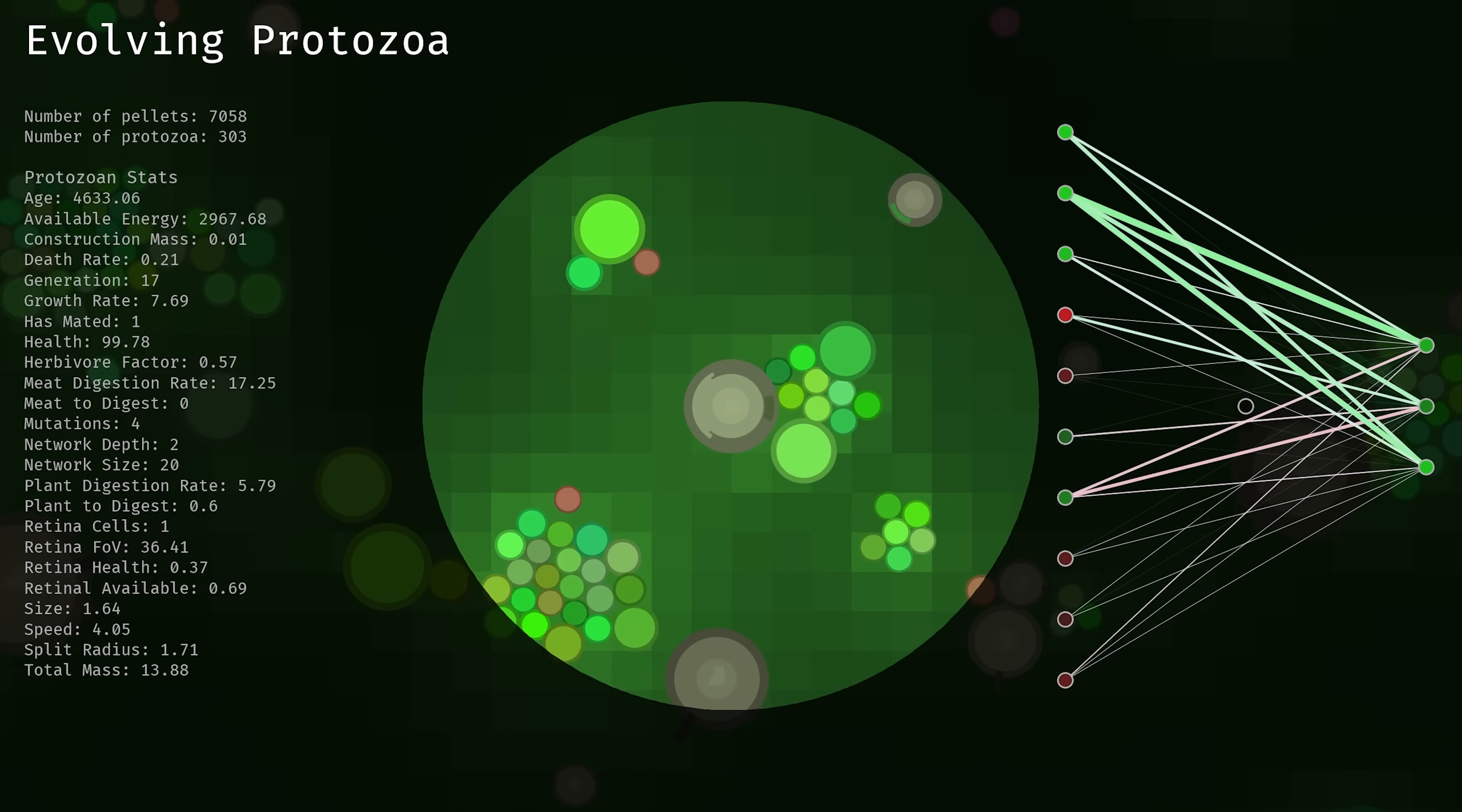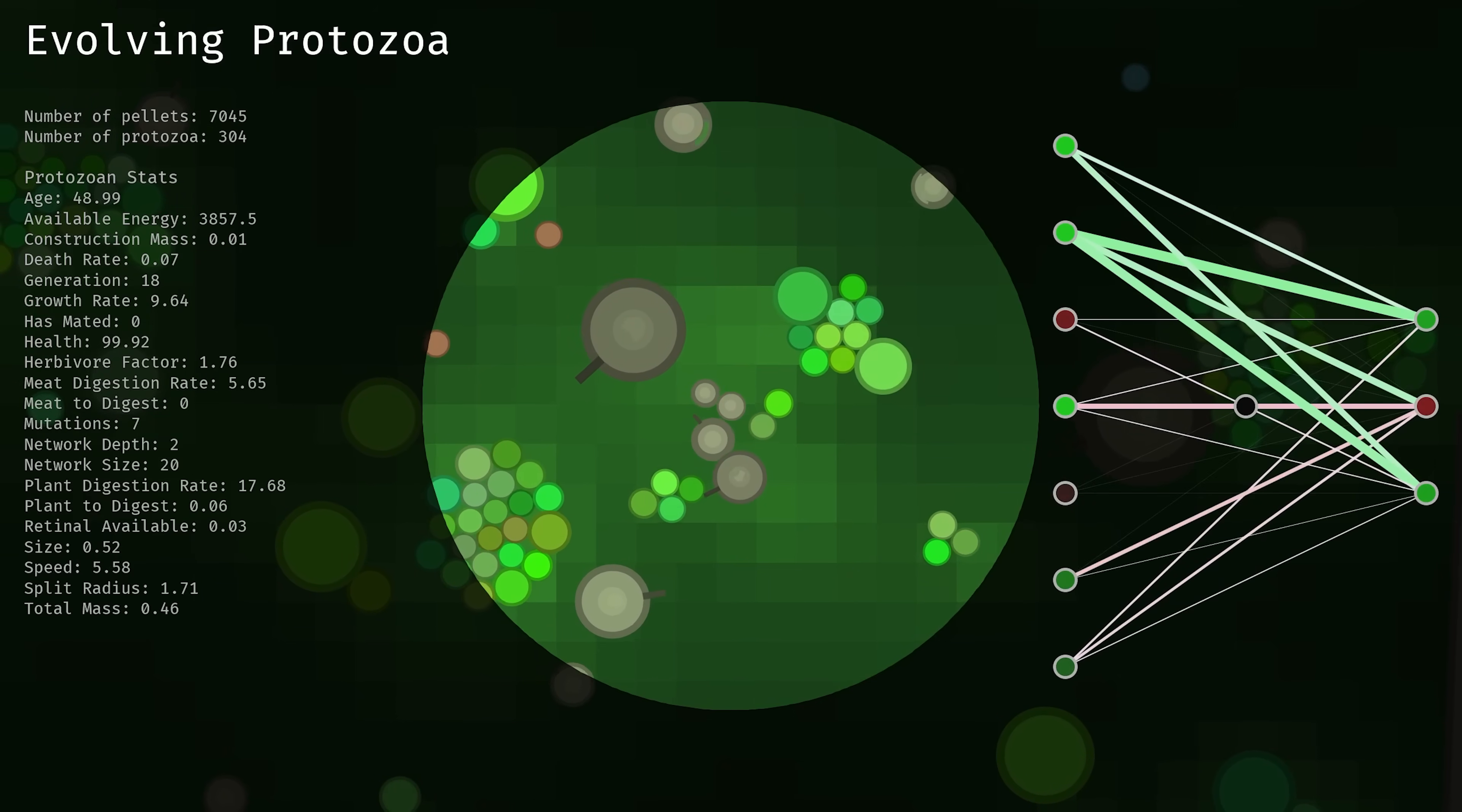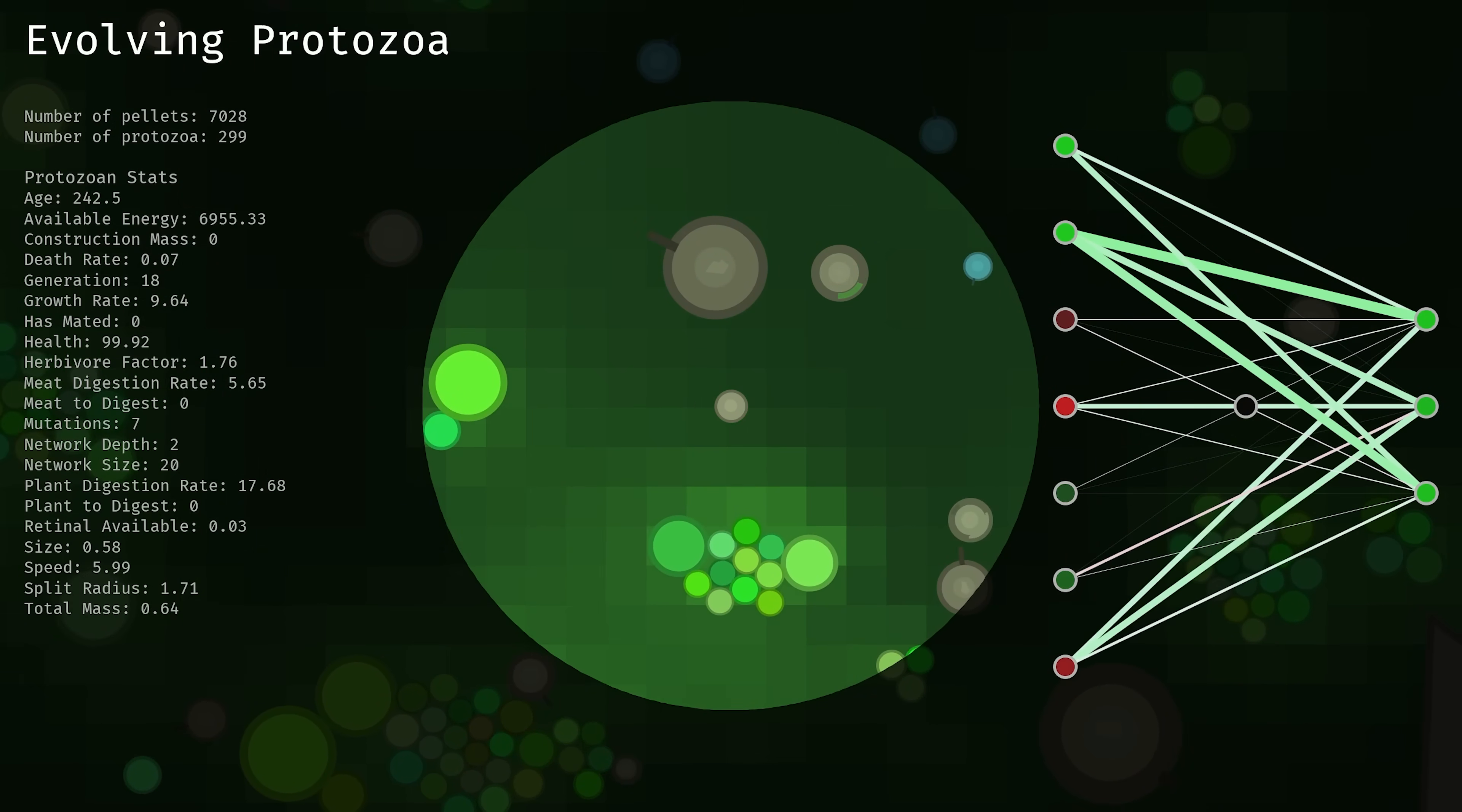Returning to the simulation, you may notice that the retina of this protozoa appears dark and faint. This is because it's underdeveloped. In order to understand the process that facilitates vision, we first need to turn to a more detailed look at how cell growth works in the simulation.